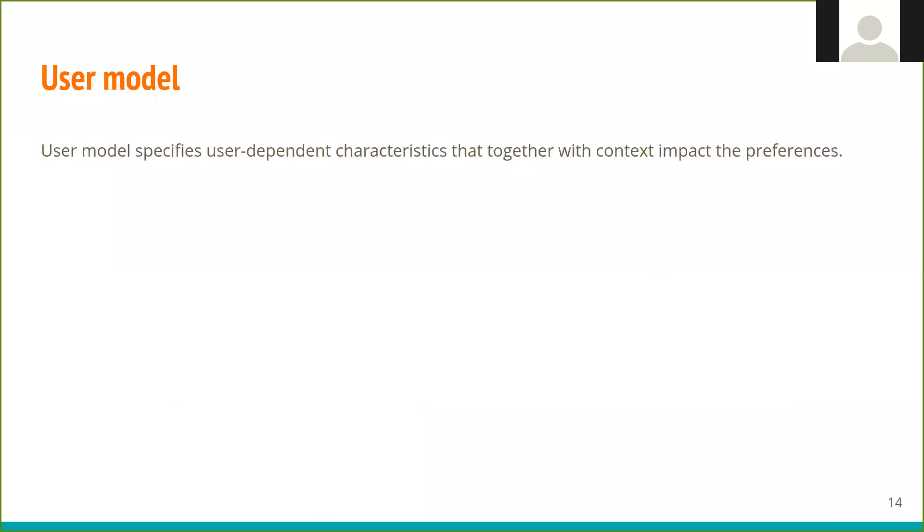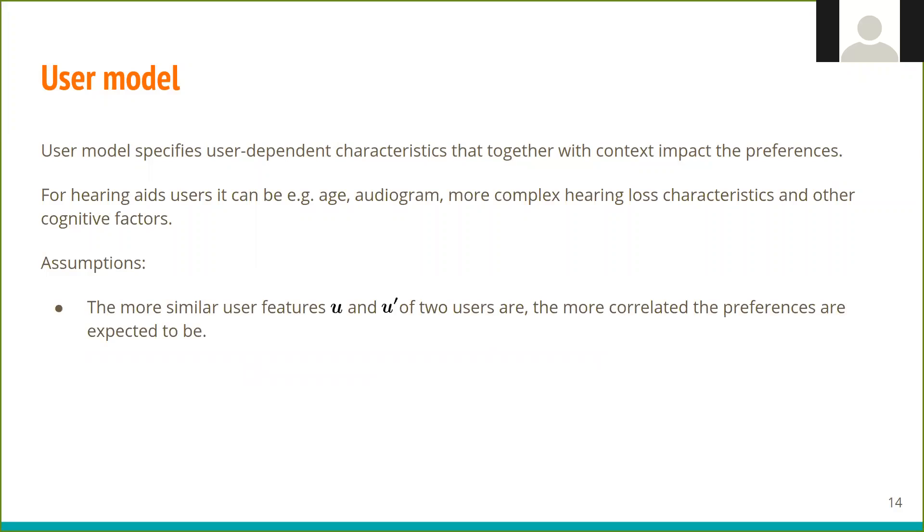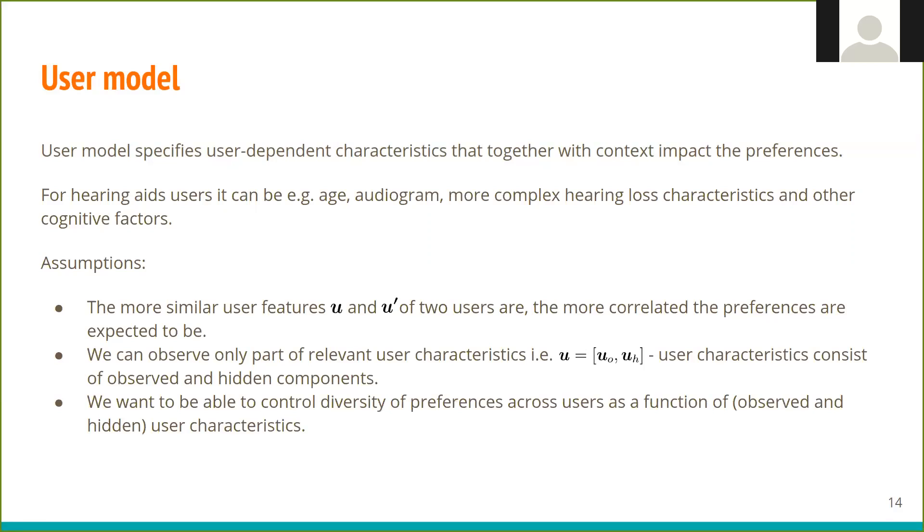The user model specifies user-dependent characteristics that together with context has an impact on preferences. For hearing aid users, it can be for example age, audiogram, or more complex hearing loss characteristics. Similarly to context, we assume that the more similar features are, the more correlated preferences will be. User characteristics also consist of observed and hidden components. And we want to be able to control diversity of preferences across users as a function of user characteristics.